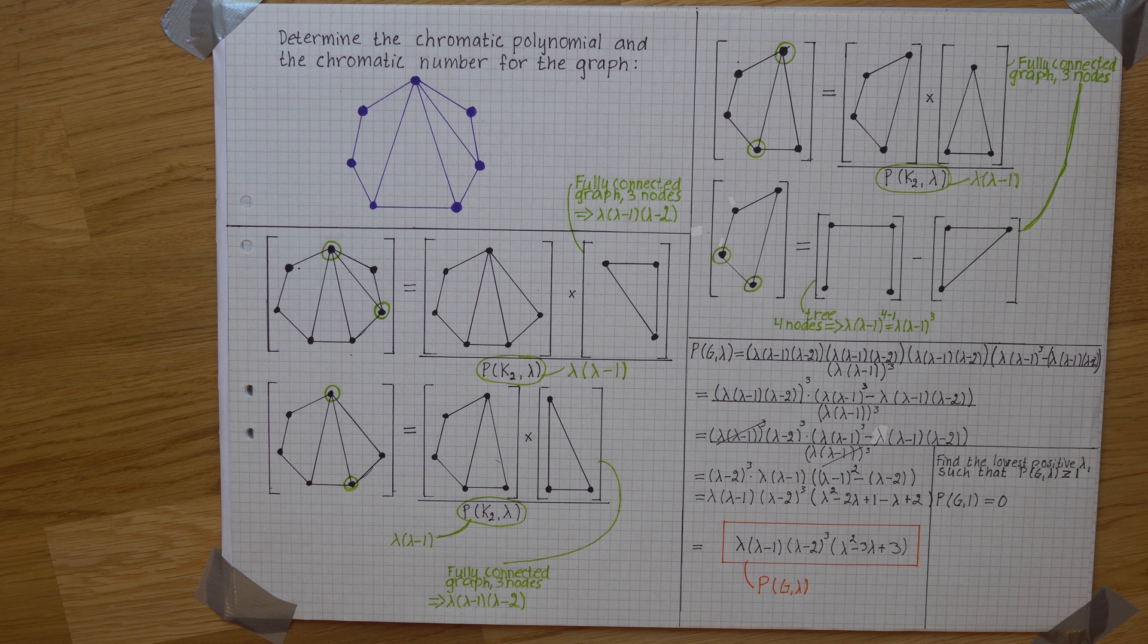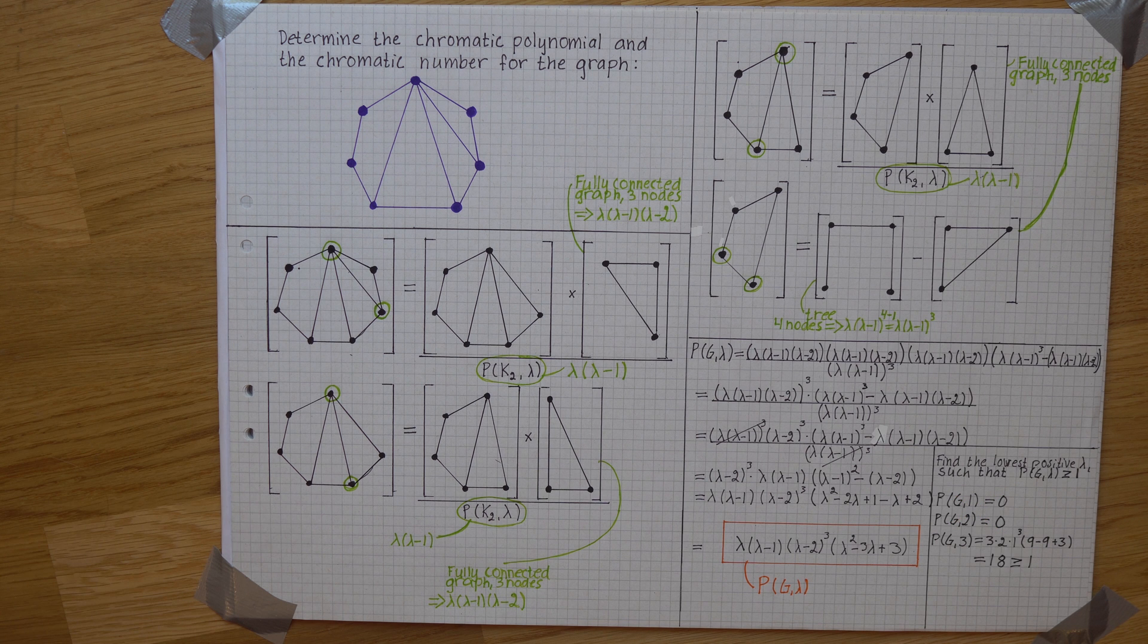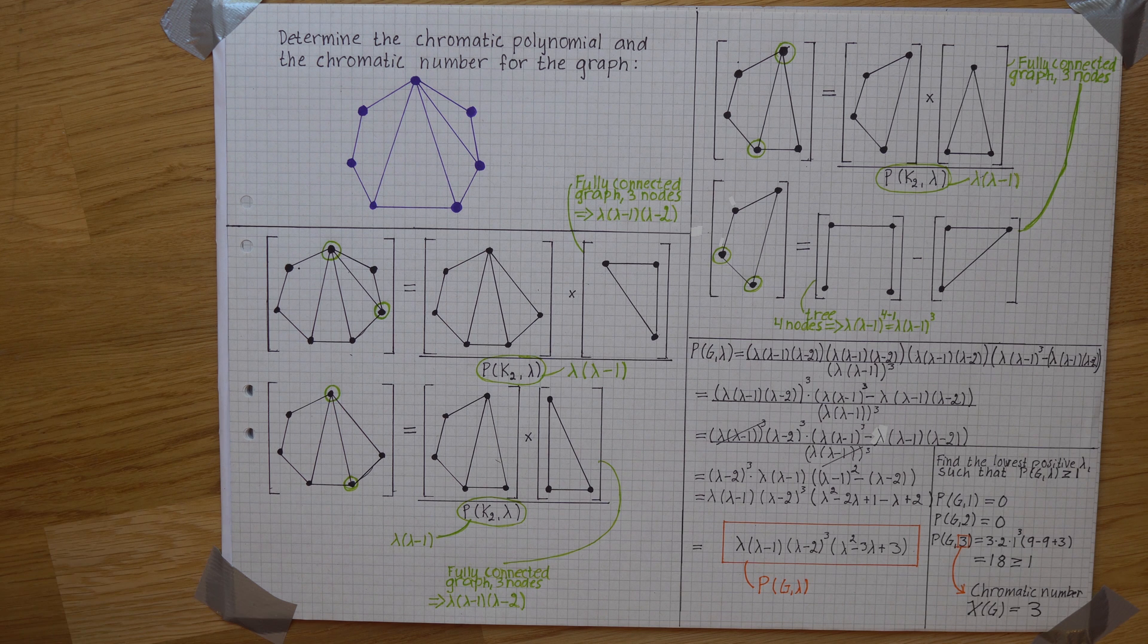If we put in 1 or 2 as lambda in the chromatic polynomial, we get 0, so that's no good. 3, however, is 18, which is greater than or equal to 1, which means that the chromatic number is 3.